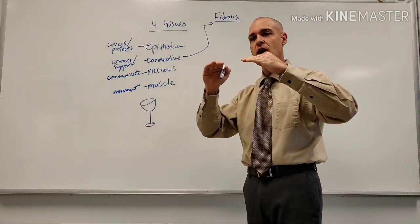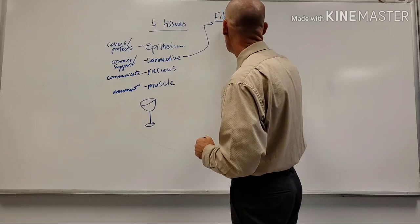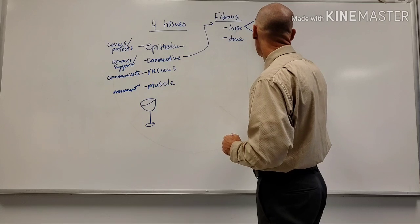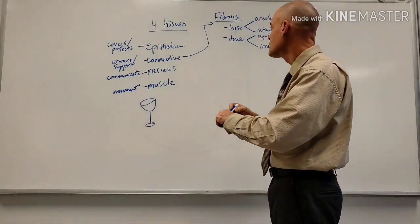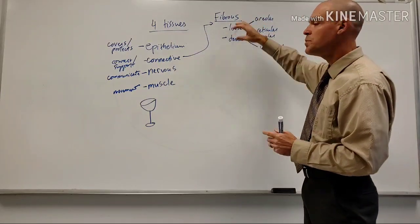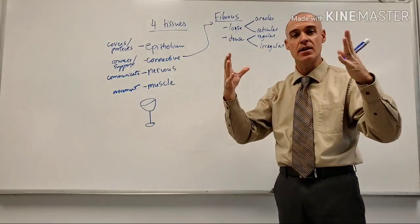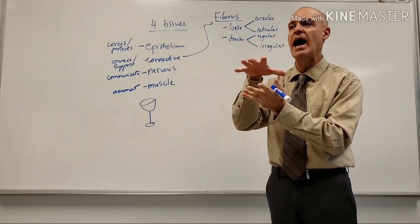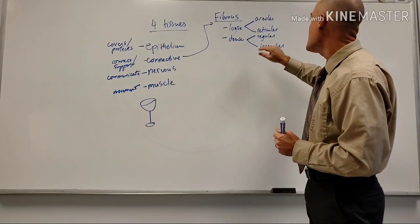Fibrous connective tissue has subtypes classified into loose and dense. Under loose we have areolar and reticular. Under dense we have regular and irregular. We call it loose because under a microscope the extracellular matrix has more space or gaps in it, versus dense, where the cells, tissues, and fibers are much more densely packed.